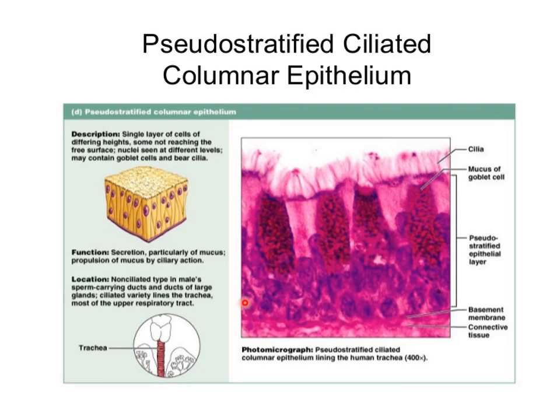The pseudo-stratified ciliated columnar epithelium is located in the trachea, bronchi, and the large excretory ducts of the glands, the portions of the male urethra, epididymis, and also some portions of the tympanic cavity.